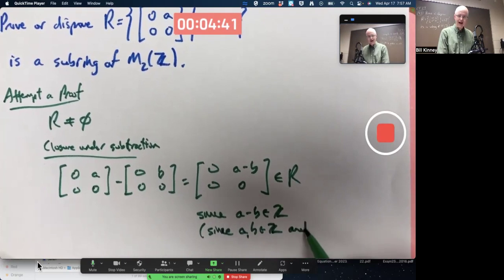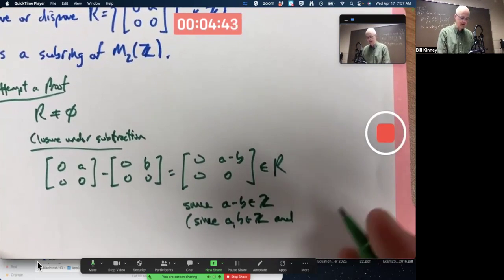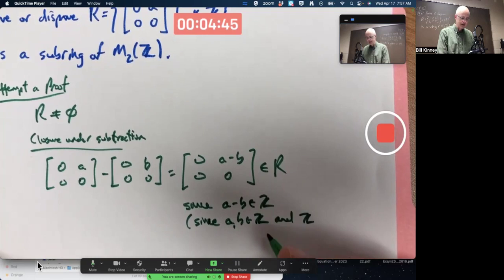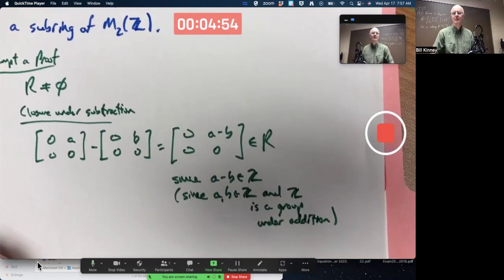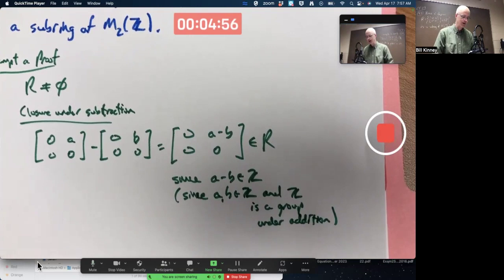I could also add another since A and B are integers. And you could also add, this is maybe a little bit of overkill, that the integers is a group under addition. But wait a minute, there's a subtraction there. Well, subtraction is addition, right? We know that.